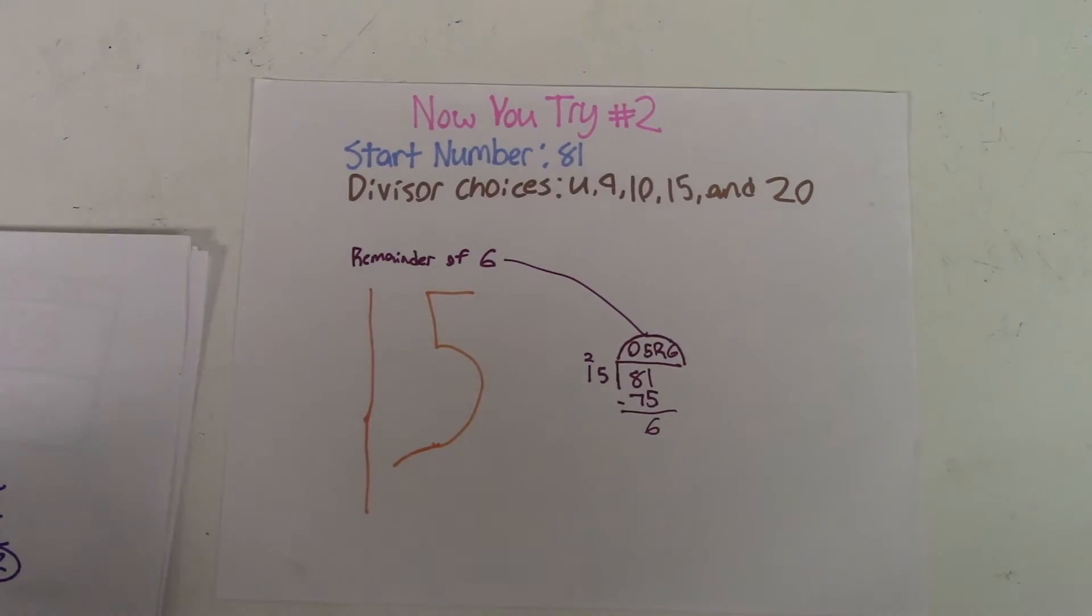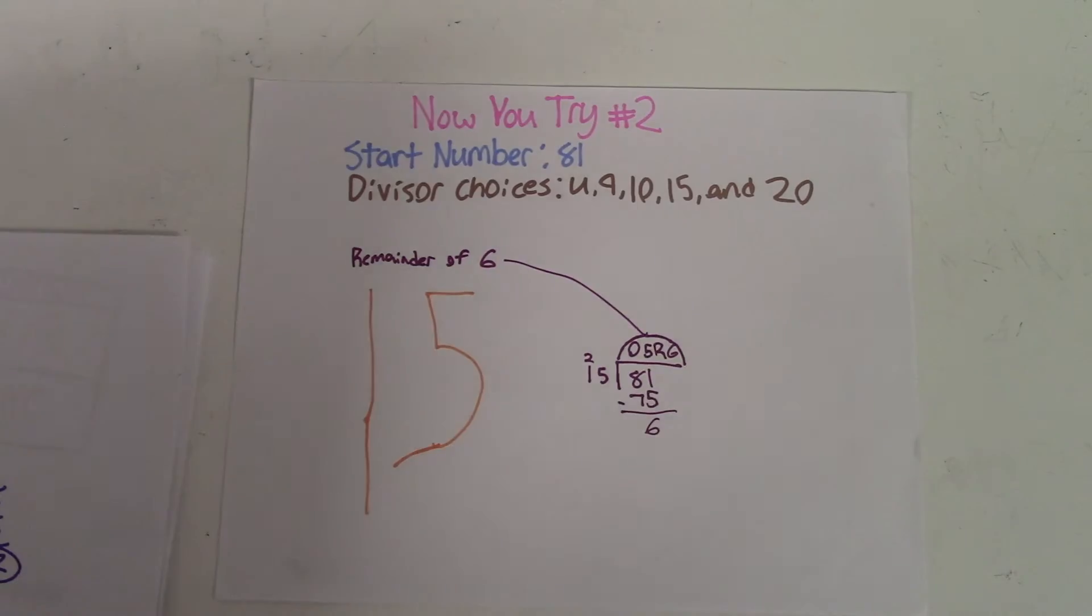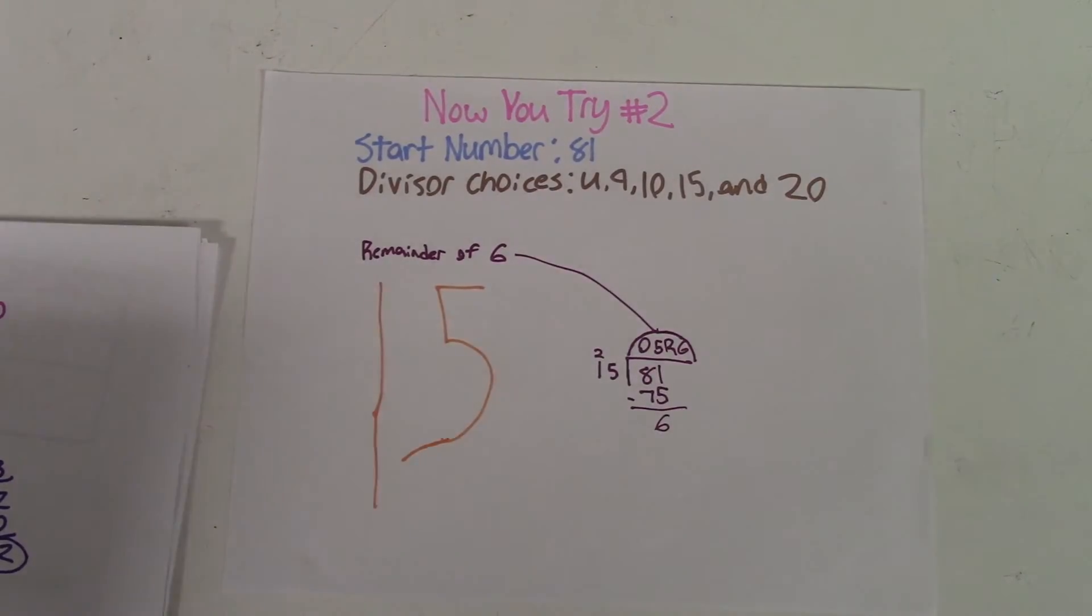The answer was 15. 15 has a remainder of 6, which isn't very good, but it's better than all the other choices. 20, for example, would get you a remainder of 1, because 20 times 4 is 80.